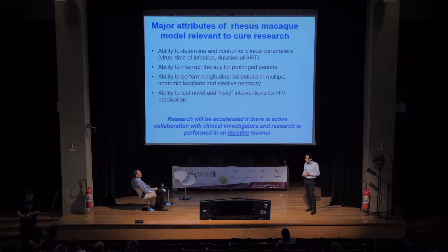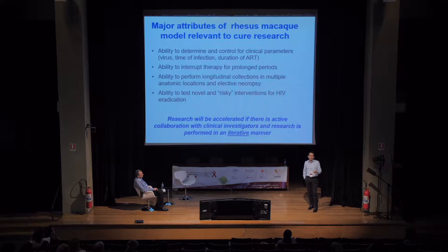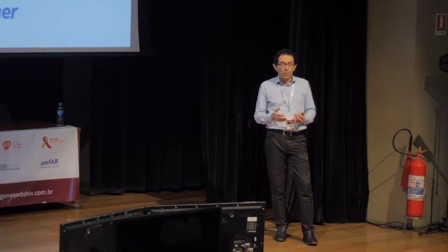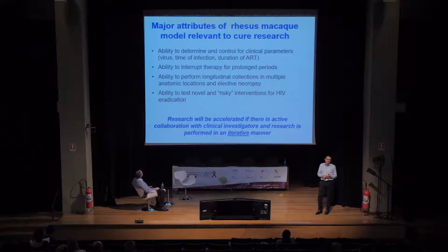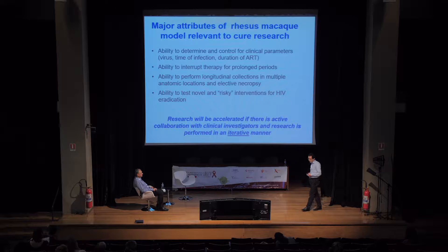This slide summarizes the main advantages of the rhesus macaque model in the context of HIV research. We can control for many clinical parameters that are very difficult to control in humans. We can interrupt antiretroviral therapy for prolonged periods without ethical issues, and importantly for reservoir studies, we can perform longitudinal collection from multiple anatomic locations — rectal biopsies, lymph nodes, blood, and bone marrow. We can also sacrifice animals on ART and look for virus in many anatomical locations, and test novel and risky interventions for HIV eradication.